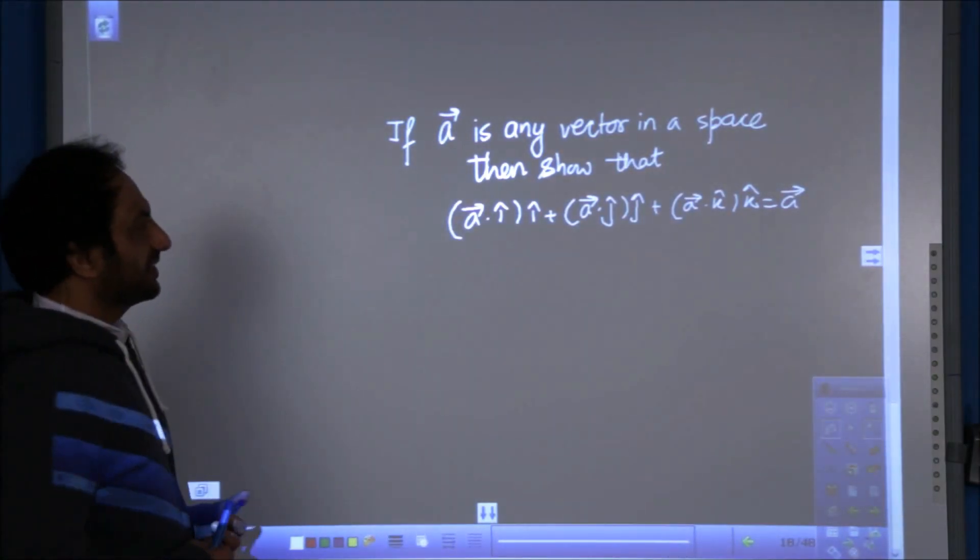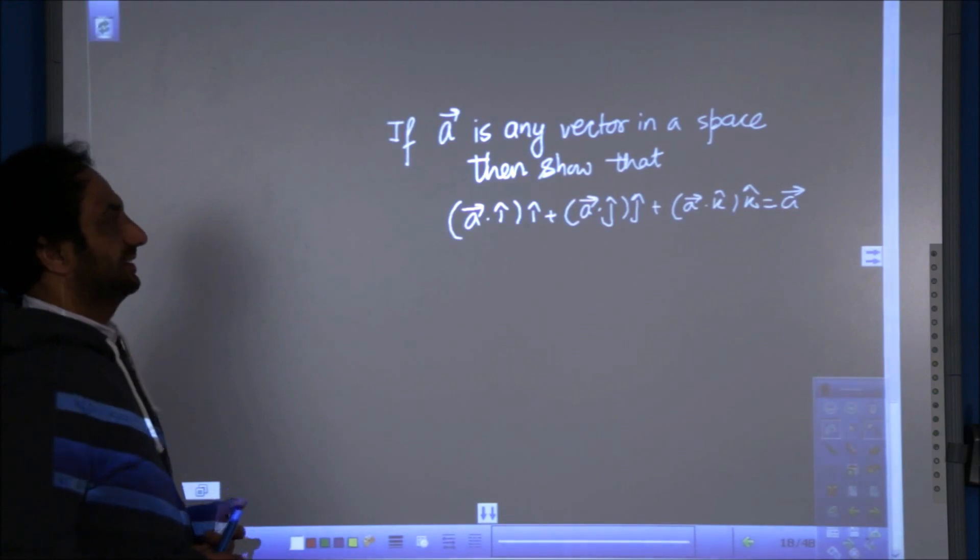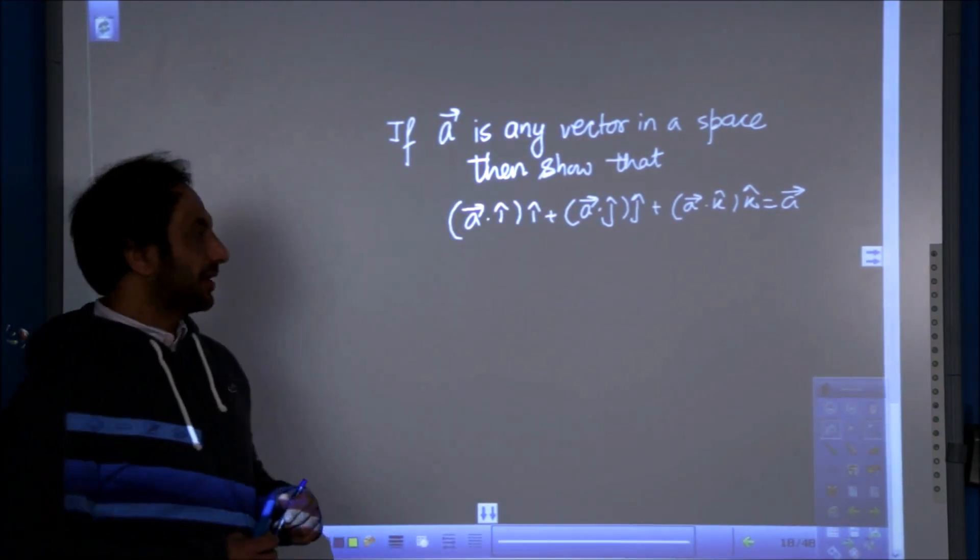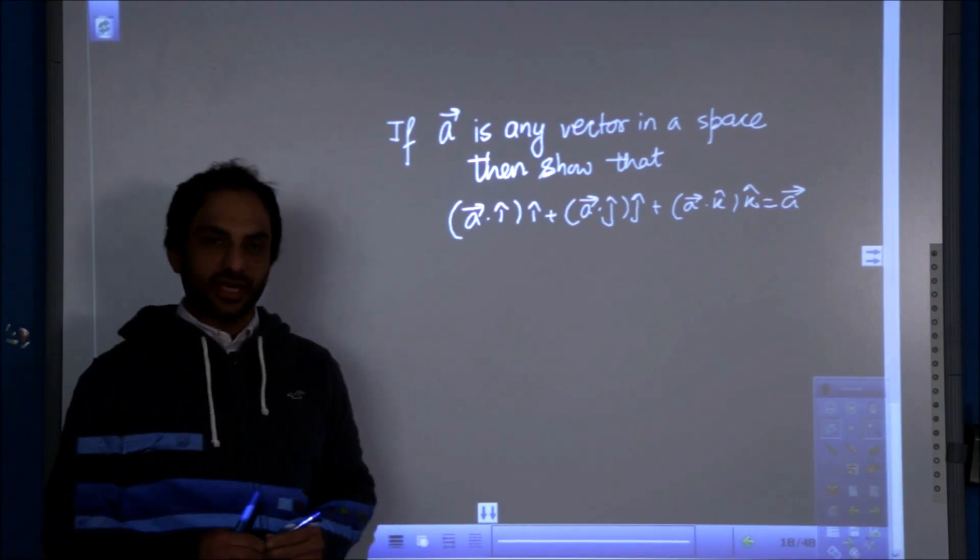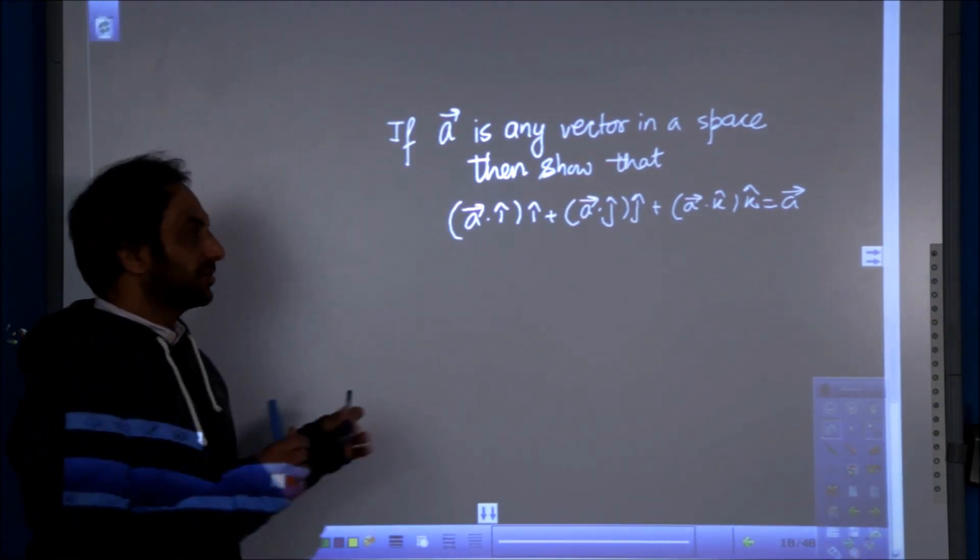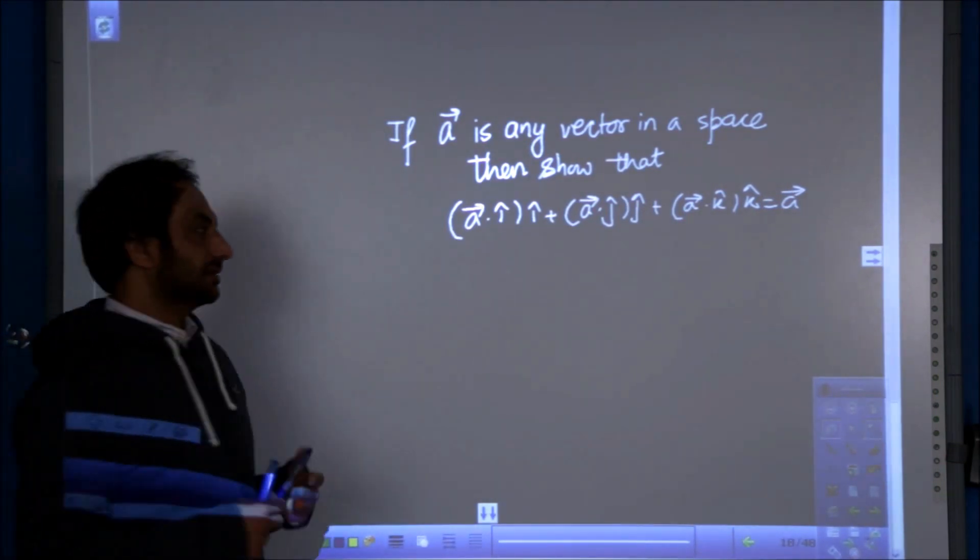If a is any vector in a space, then show that a dot i into i plus a dot j into j plus a dot k into k equals a vector.